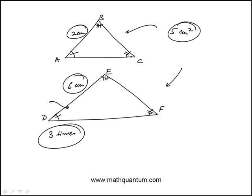Let's call the base here b and the height h, so the area would be base times height over two, which equals five square centimeters. Now the corresponding base here would be three times b, because we notice that the sides are three times AB.